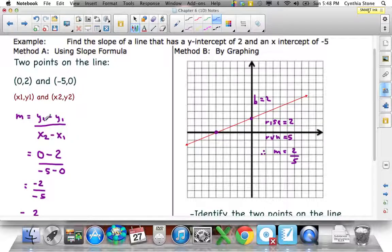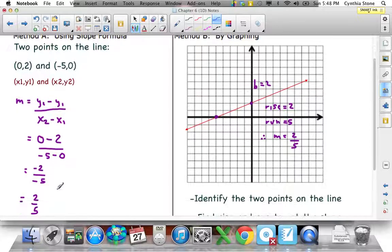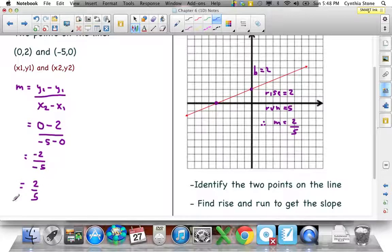Then you can use your slope formula. So, y2 is 0, right? Kind of line them up there. Y2 is 0. And y1 is 2. So, 0 minus 2. And x2 is negative 5. And x1 is 0. And you end up with negative 2 over negative 5, which is just 2 over 5. So, that's one way of finding the slope.